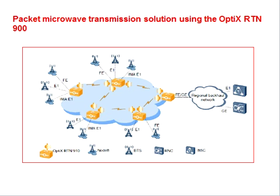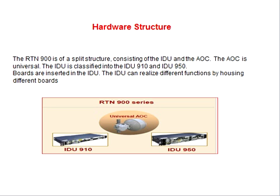This is a simple example of a packet microwave transmission solution using the OptiX RTN 900. In this diagram, we have BSC, RNC, and a small OptiX RTN 900 ring connecting to the sites. This shows the basic hardware structure for the RTN 900 series.